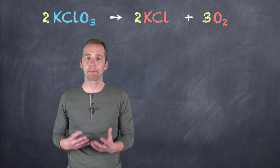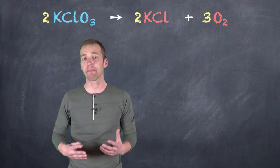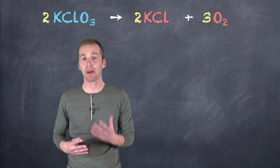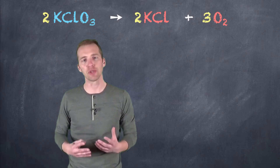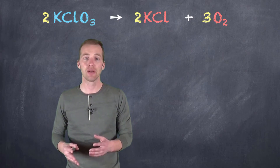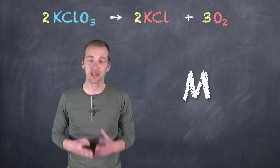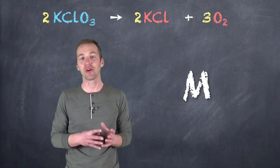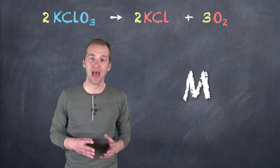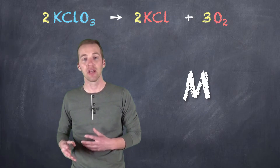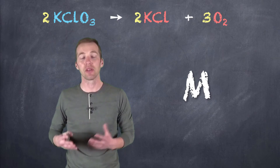But how do we compare the numbers in the balanced chemical equation to the mass of those reactants and products? Remember, this is a number ratio, not a mass ratio. So we have to have a go-between between mass and number, and that, of course, is molar mass. It allows us to establish, based on the grams per mole, the number of moles of a particular substance we have if we know the mass. And if we know the number of moles, we can use the molar mass to figure out the mass.